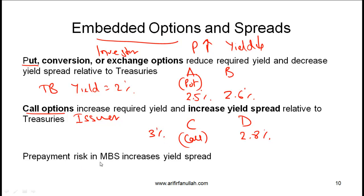Another point related to mortgage-backed securities: there is an element of prepayment risk when investors invest in mortgage-backed securities. Prepayment risk is the risk that homeowners will make payments faster than originally scheduled, so the investor gets principal back faster and receives lower interest payments. Because of that prepayment risk, the yield on mortgage-backed securities will be relatively high. If you have a mortgage-backed security and another security without prepayment risk but similar in all other regards, the yield spread on the MBS will be slightly higher.